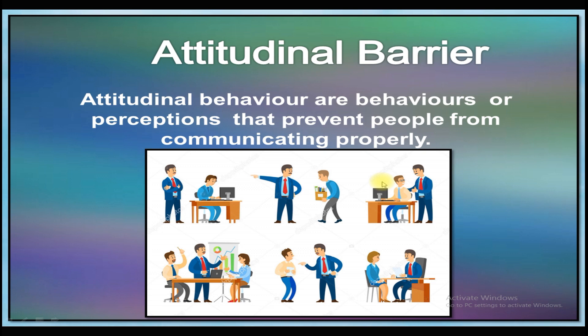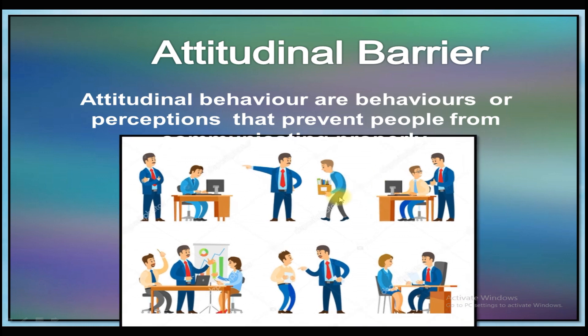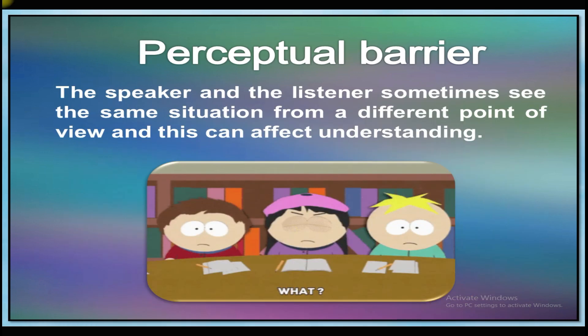The next slide is about the attitudinal barrier. Attitudinal barriers are behaviors or perceptions that prevent people from communicating properly — they are barriers that distance one from others. The next one is the perceptual barrier: the speaker and the listener sometimes see the same situation from a different point of view, which can affect understanding. Different world views can create misunderstandings, as people tend to interpret messages from their own point of view or ideologies.